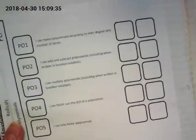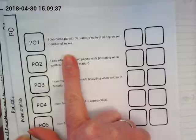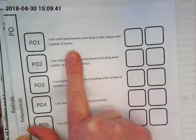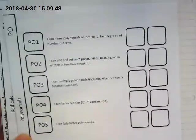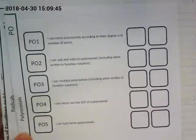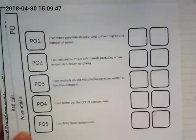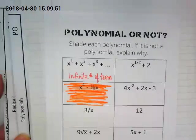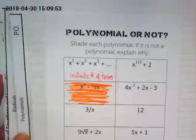Last thing I want to do is take you back to our objectives. This is our first objective: naming polynomials according to their degree and number of terms. I will leave with the sub some practice problems that you guys can do out of your book. And again, when you finish, you are going to work on your scavenger hunt.